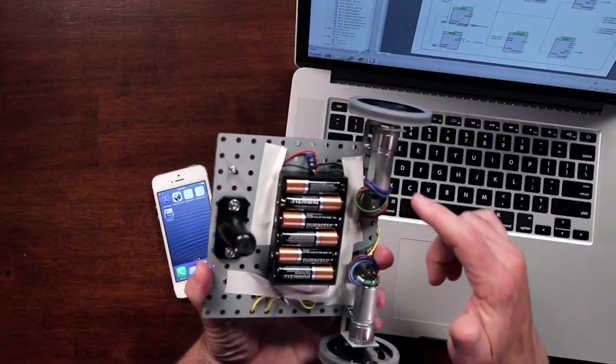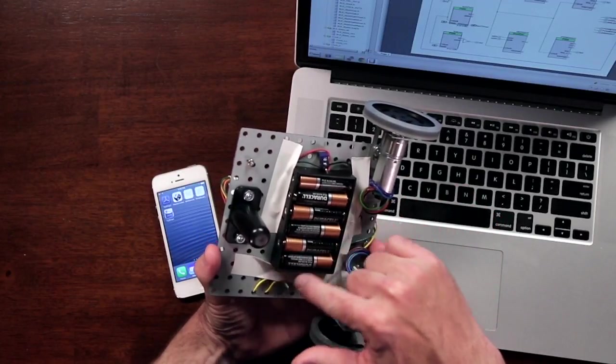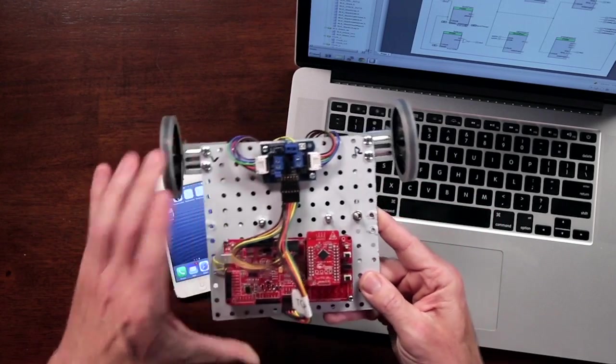So let me show you what I've got here. I started with the two Digilent motors. I've got a battery pack which I got from Radio Shack. I did a little switch to turn the batteries on and off.